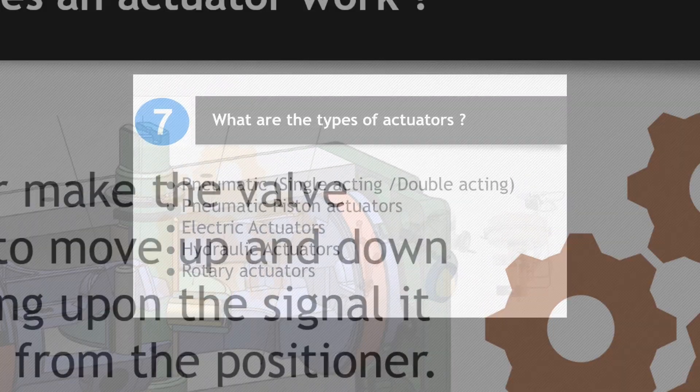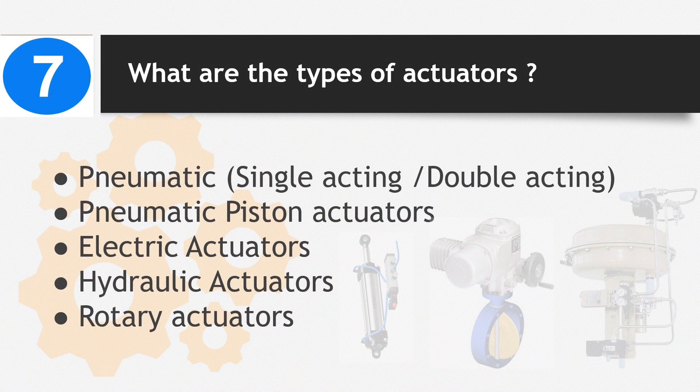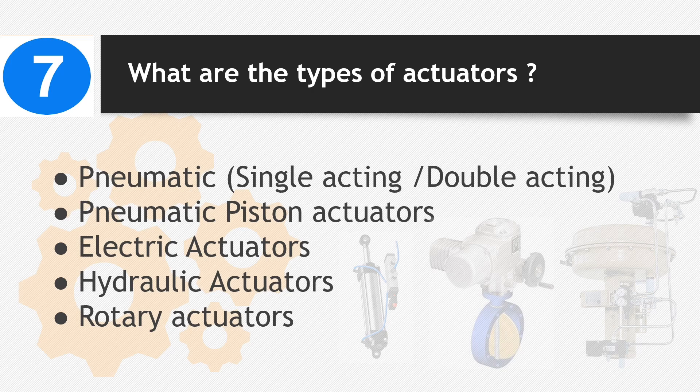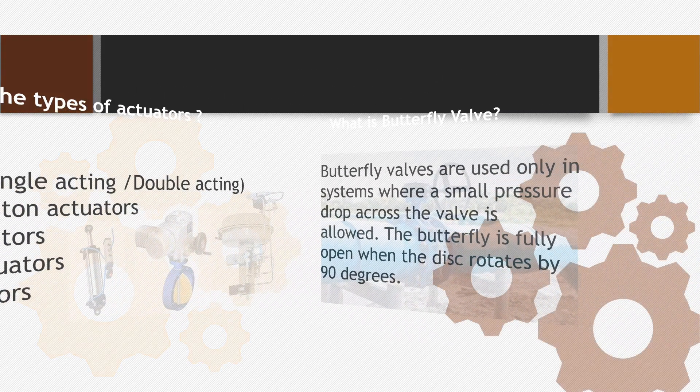Number 7: What are the types of actuators? Pneumatic single-acting, double-acting, pneumatic piston actuators, electric actuators, hydraulic actuators, and rotary actuators.